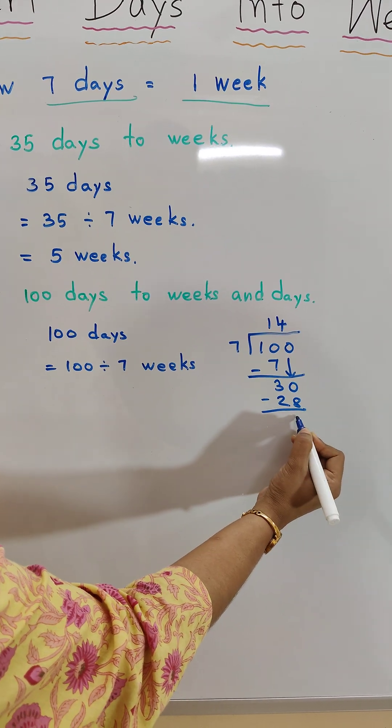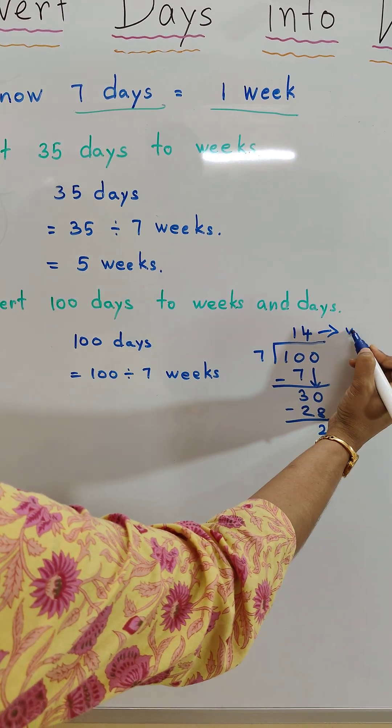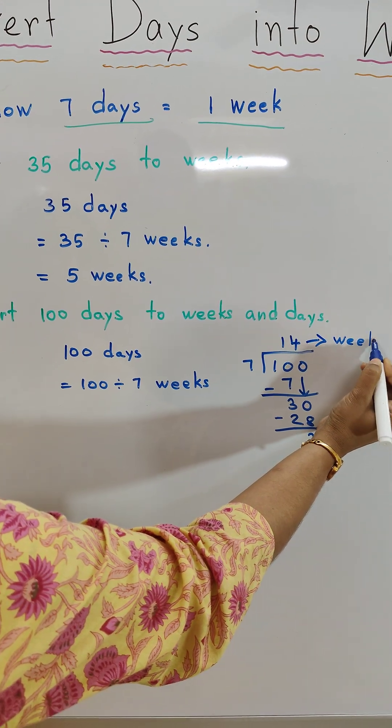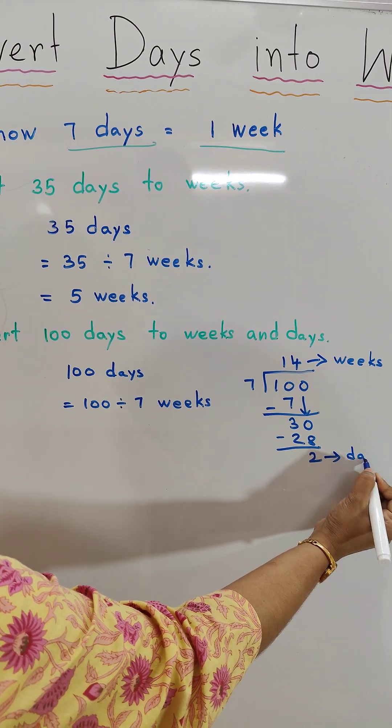30 minus 28 is 2. So 14 is the weeks which is quotient and 2 is the remainder that is days.